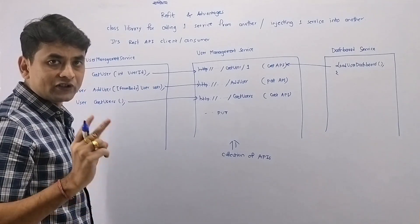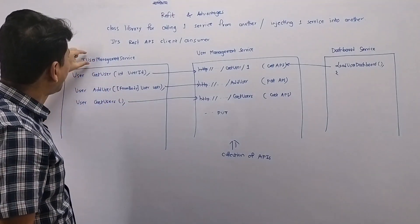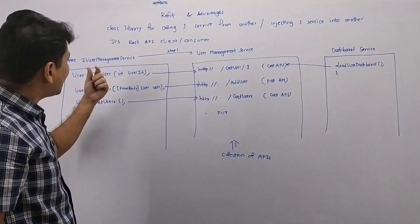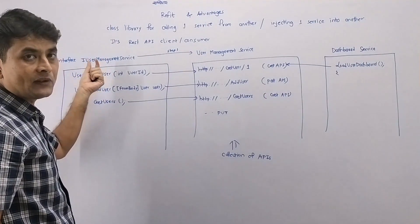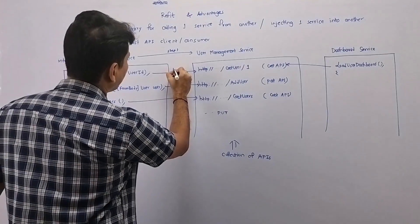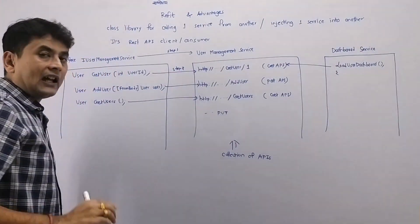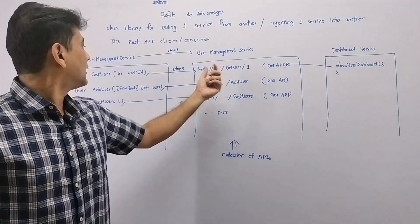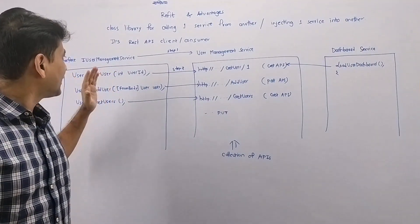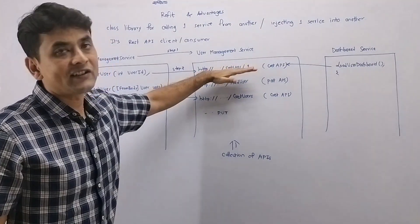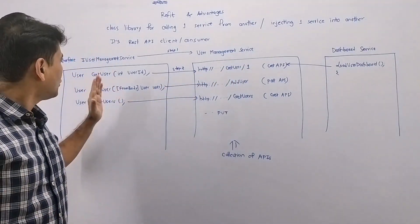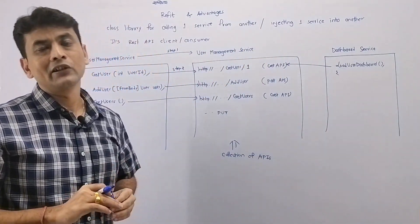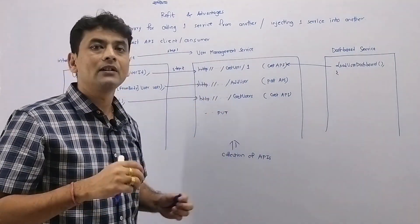We will do two steps: step one, using Refit we will link the IUserManagementService interface with the User Management Service. Step two, we will link each method in the IUserManagementService interface with its corresponding API. Behind the scenes, when we call Get User from the Dashboard Service, Refit will call the Get User API for us. We simply inject the IUserManagementService interface into the Dashboard Service, and that's it — Refit handles calling those APIs behind the scenes.